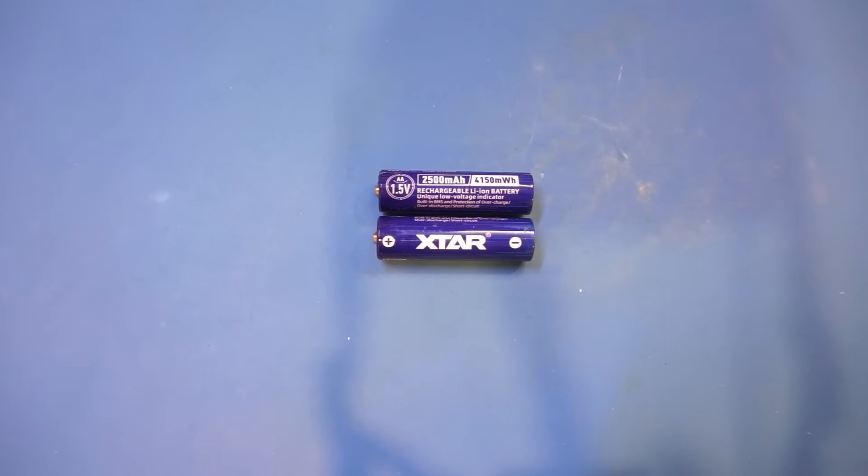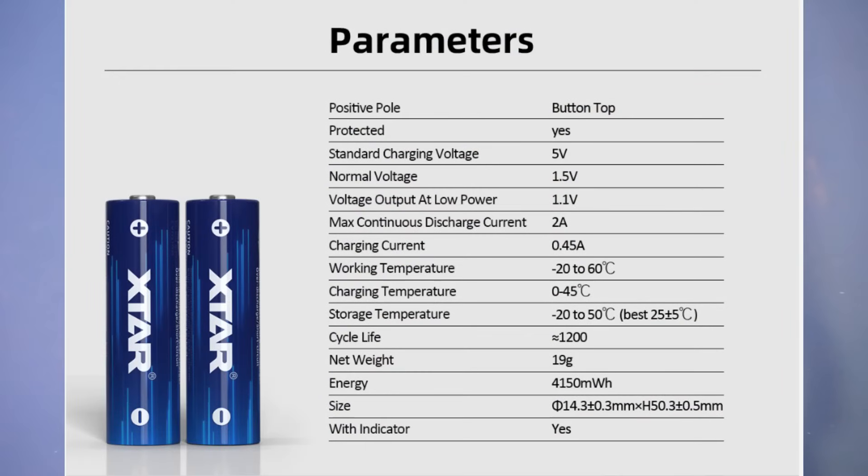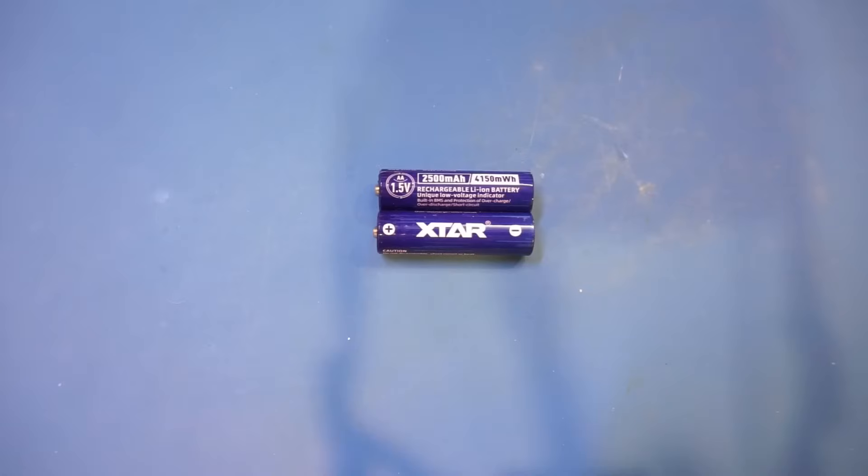Now, the specified capacity is a little bit confusing. If I take the 1.5V voltage and the 2.5Ah capacity number, I get 3.75Wh, not the 4.15Wh that is given.